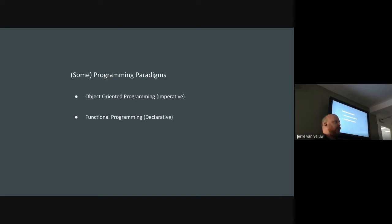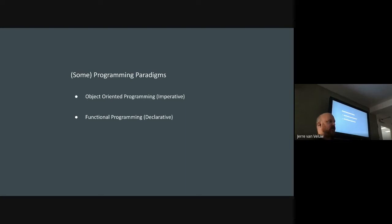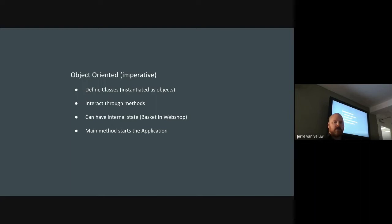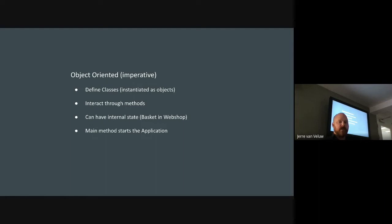There are some programming paradigms to consider. Object-oriented programming is an imperative paradigm where you program in objects and say 'do this, do that.' Functional programming on the other hand uses a more declarative style where you describe a recipe to execute. In OOP, you define classes that are instantiated as objects and interact through methods. These objects can have internal state — for example, a basket in a webshop where you add items, remove items, and save the basket to the database.